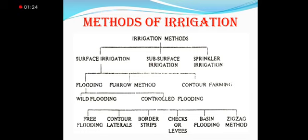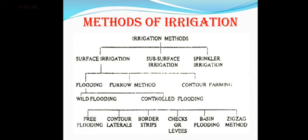Controlled irrigation means when we allow water to flow down and irrigate the land in a controlled way. There are various methods for doing this: free flooding, contour levels, border strips, checks or levees, basin flooding, and zigzag flooding.